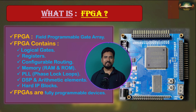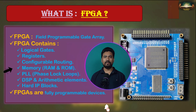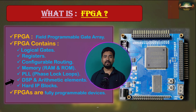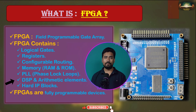All FPGA devices consist of logical gates, registers, and configurable routing. Most modern FPGAs also include built-in block memory resources for implementing RAMs and ROMs within the device. They also typically feature PLLs — phase-locked loops — for clock frequency scaling along with frequency multiplexing and division. Some FPGAs include dedicated arithmetic blocks for tasks like multiplication, addition, and subtraction.